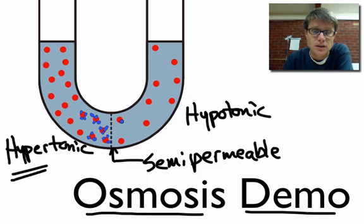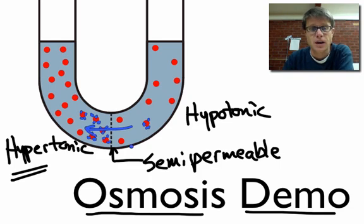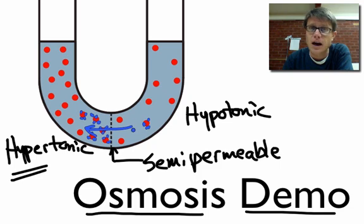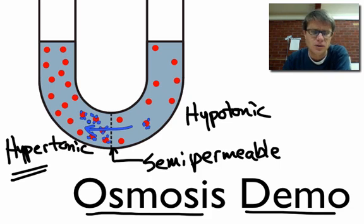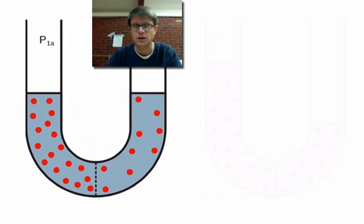Over here there's less solute, so there are fewer water molecules grabbing onto solutes. So the water is going to flow in that direction. However you want to think about it — is the water flowing from an area of high water concentration to low, or is the water flowing towards a hypertonic area? Either way, it doesn't matter as long as you know which way the water is going to flow.